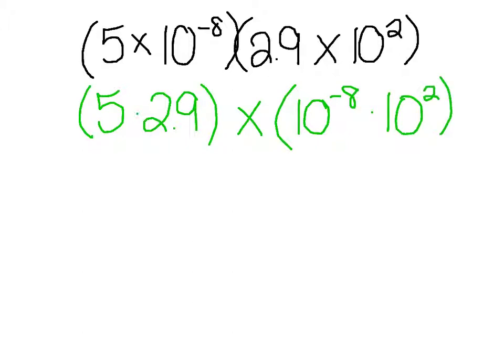As we multiply this out, we get 5 times 2.9, which is 14.5. Now we have the same base, which is 10, so we're going to keep the base and, because we're multiplying, we're going to add the exponents. Negative 8 plus 2 is negative 6. So I get 14.5 times 10 to the negative 6.